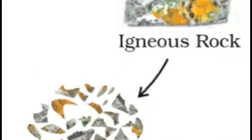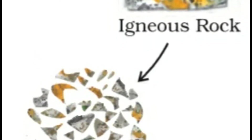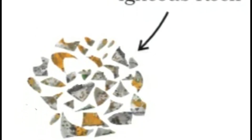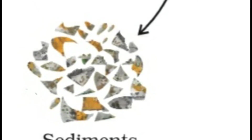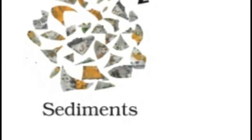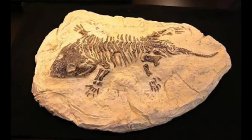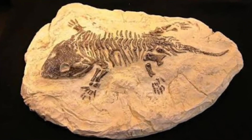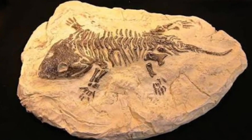Rocks roll down, crack and hit each other and are broken down into small fragments called sediments. These sediments are transported and deposited by wind, water, etc. These loose sediments are compressed and hardened to form layers of rocks known as sedimentary rocks. These rocks may also contain fossils of plants, animals and other microorganisms. The remains of dead plants and animals trapped in the layers of rocks are called fossils.